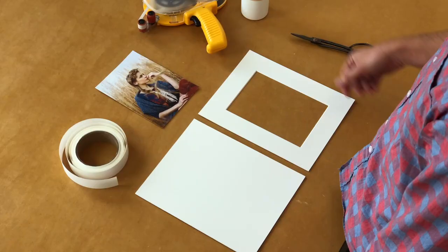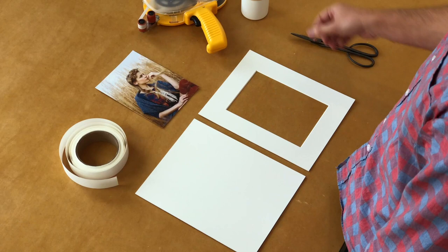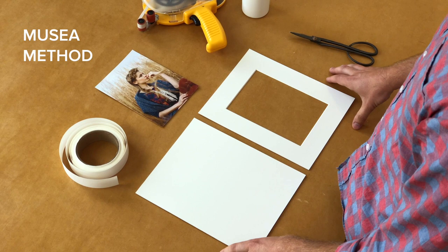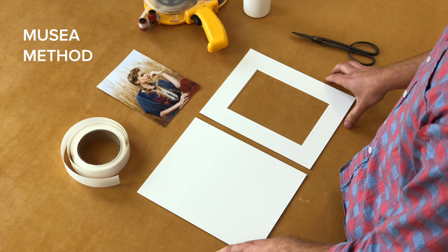Okay, so the first thing we're going to do is I'm going to show you how we mat photographs here at Musea. So any matted photograph you get from us, this is how you'll receive it. That way you can duplicate it yourself at home. So you'll have your front mat, and then you have your back mat, you have your print, linen tape, your Scotch ATG gold tape, and then your PVA book binding glue.